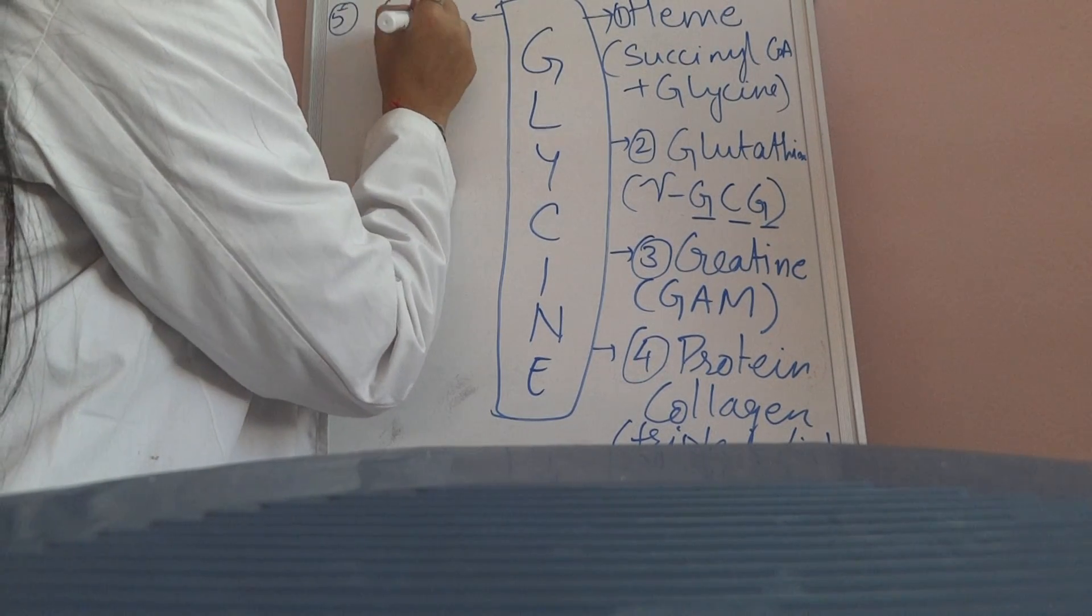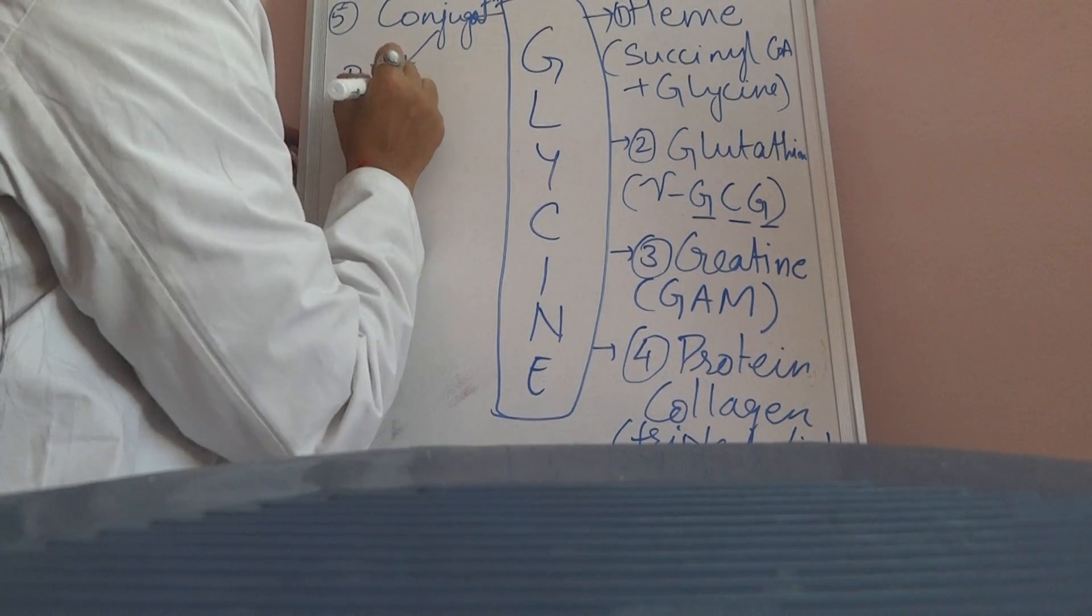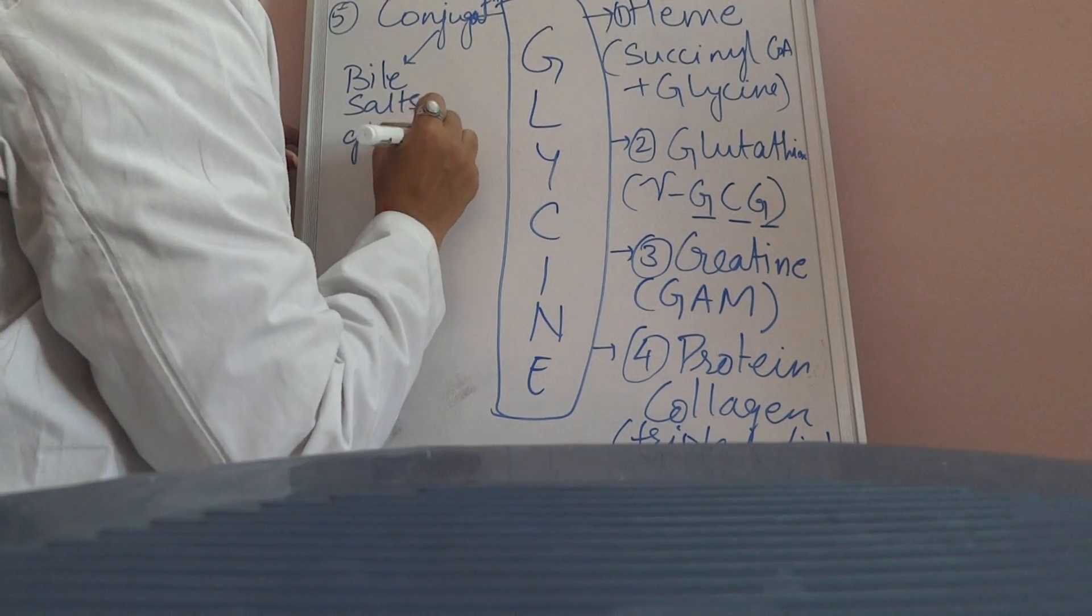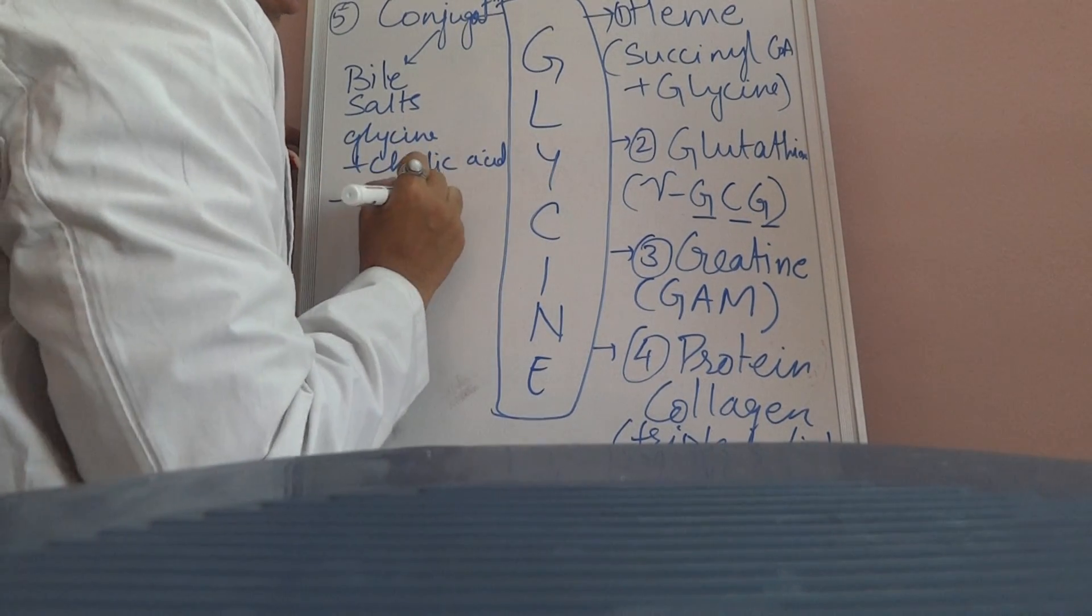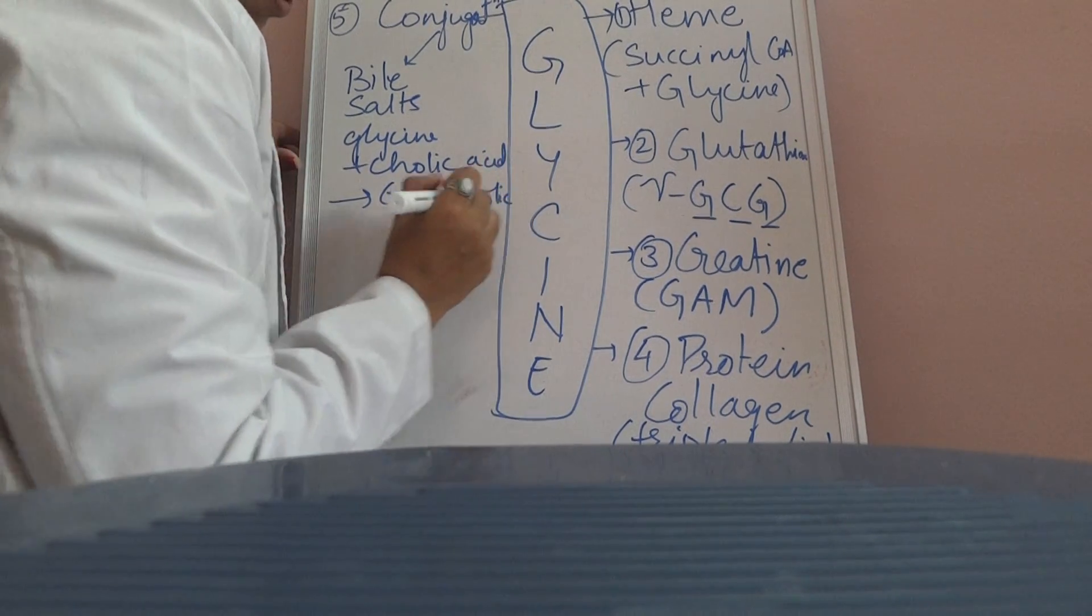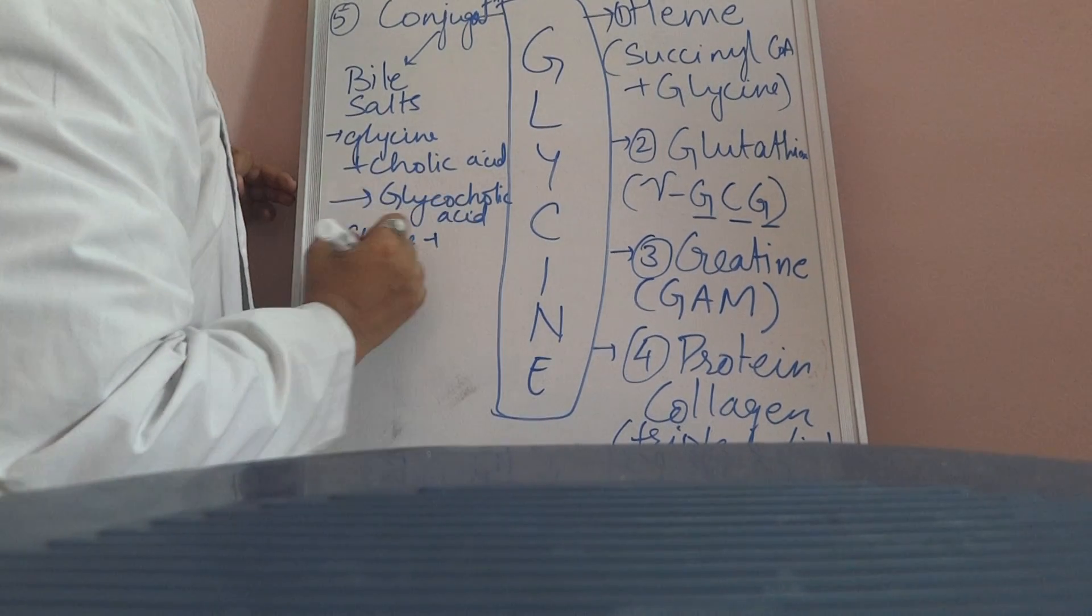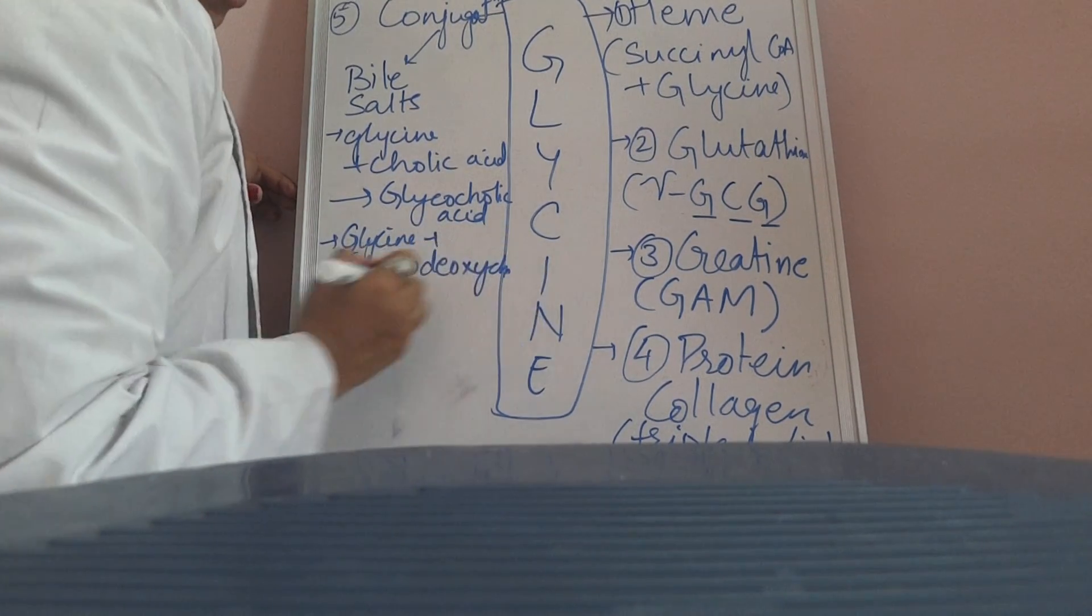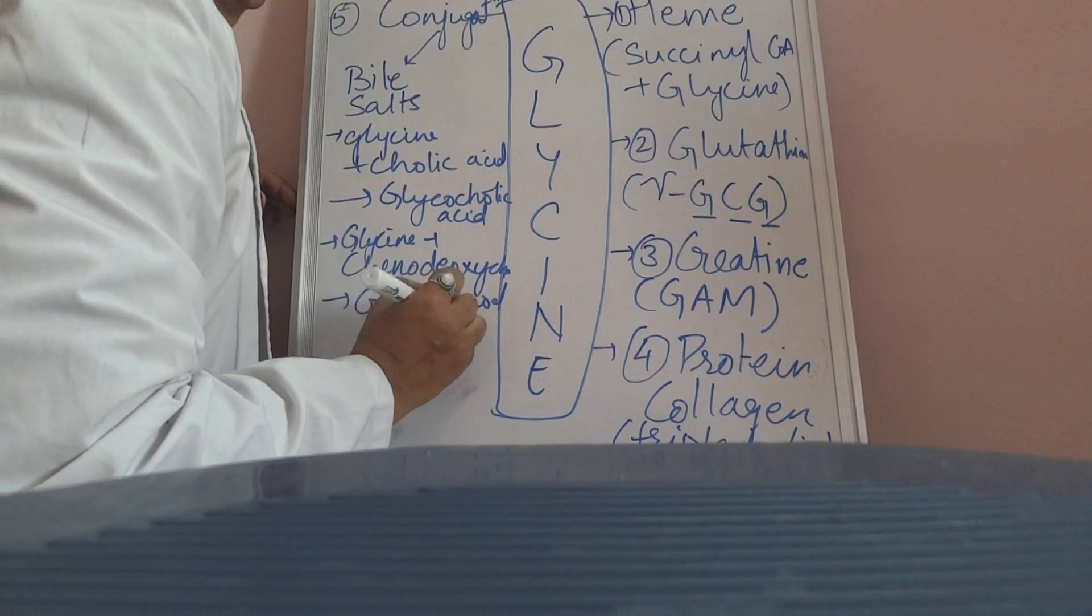It takes part in important conjugation reactions. The first one is for the formation of bile salts. Glycine plus colic acid will form glycocolic acid. Second, glycine plus chenodeoxycholic acid will form glyco-chenodeoxycholic acid.